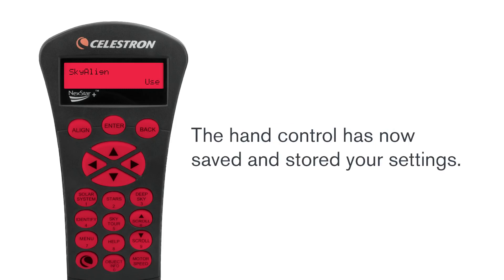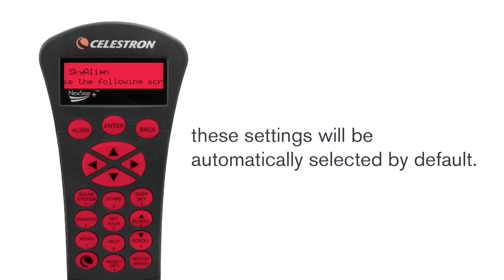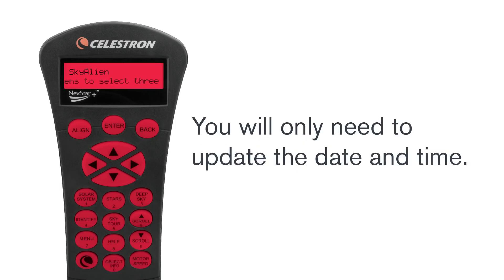The hand control has now saved and stored your settings. The next time you set up the telescope, these settings will be automatically selected by default, making the alignment process much faster. You will only need to update the date and time.